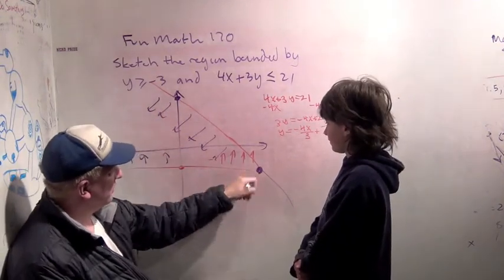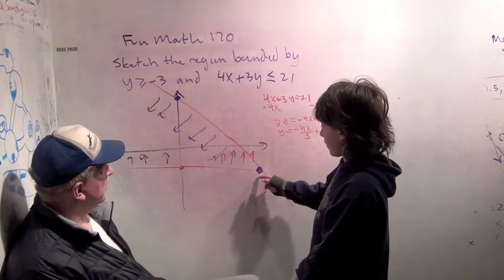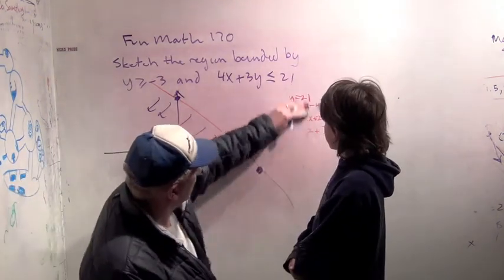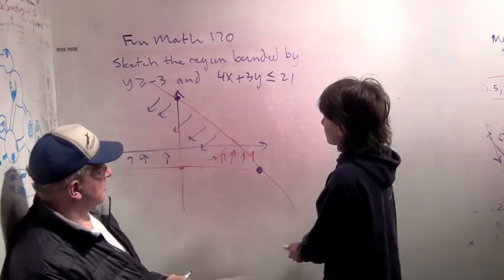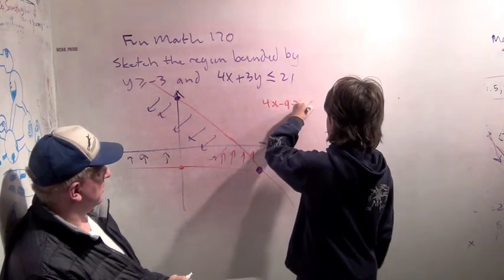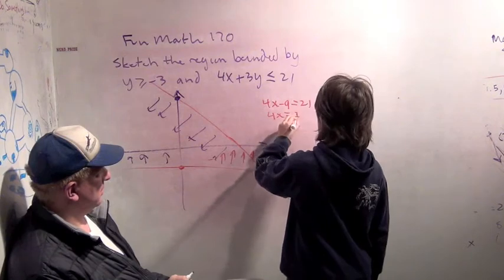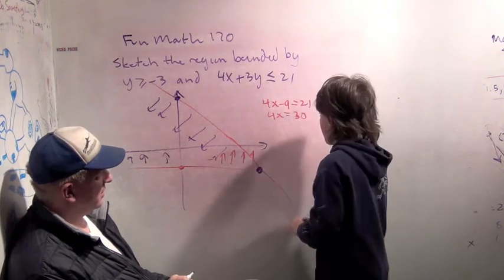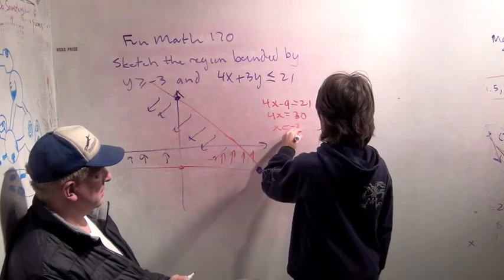Now, the last question is we've got to figure out where this point of intersection is. How do we do that? Well, y is -3. So what are you going to write down here? So 4x minus 9 is 21. 4x is 30. And then x is 30 over 4.